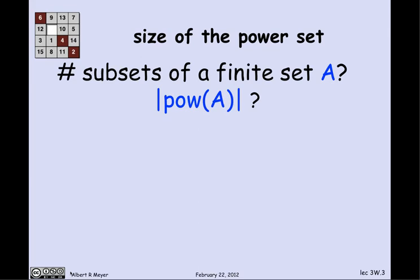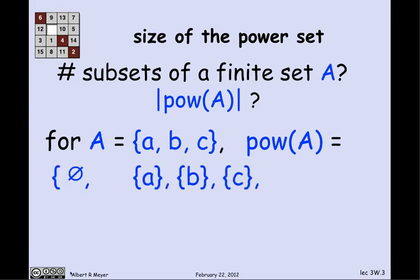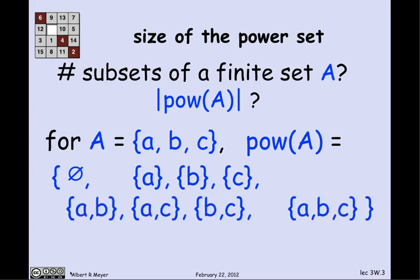Let's use this bijection idea immediately. Suppose you want to figure out how many subsets there are of a finite set A — that is, what's the size of the power set of A. The power set of A is all possible subsets of A. If A has elements a, b, c — a set of size 3 — then the power set has one subset with no elements, three subsets with one element, three subsets with two elements, and one subset with three elements, for a total of eight subsets.